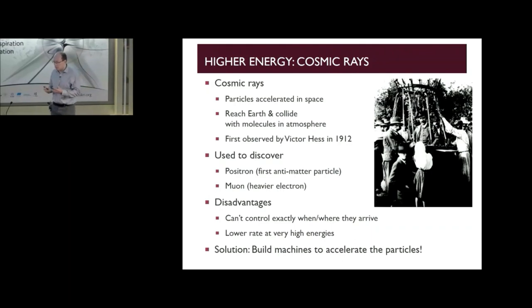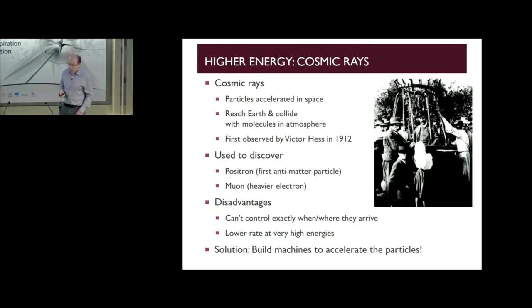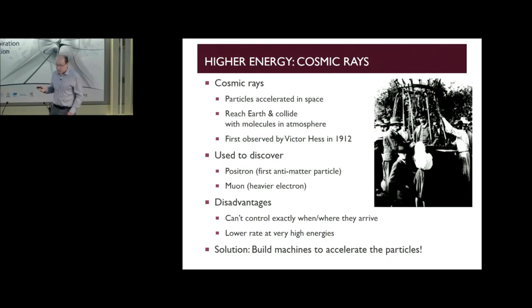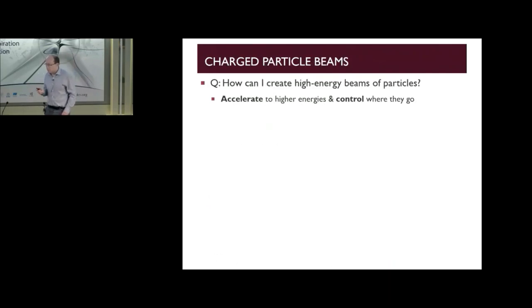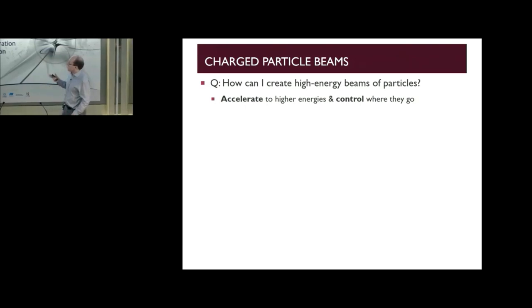The second disadvantage is that as we learn more about the structure of the nucleus, we wanted to look at finer and finer details, which again means going up to higher and higher energies. Beyond a certain energy, as you consider higher and higher energies, you find that cosmic rays arrive at the earth at a much lower rate. So beyond a certain energy it's just not feasible to base your experiments on cosmic rays anymore. You have to build machines to accelerate the particles.